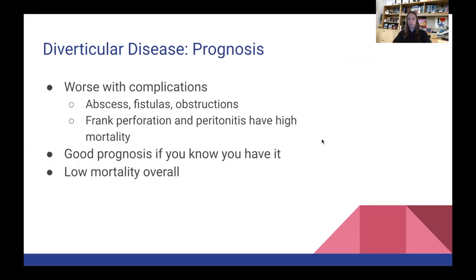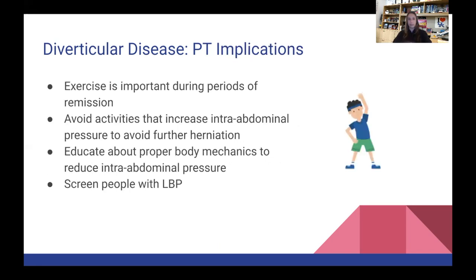Prognosis is good overall with low mortality, especially if you know you have it and treat it. It is worse with complications such as abscesses, fistulas, obstructions, frank perforations, and peritonitis, which are associated with high mortality. PT implications for diverticular disease include reinforcing the importance of exercise especially during periods of remission, avoiding activities that increase intra-abdominal pressure to prevent further herniation, education about proper body mechanics to reduce pressure, and screening people who come in with low back pain as that can be an area of referred pain.